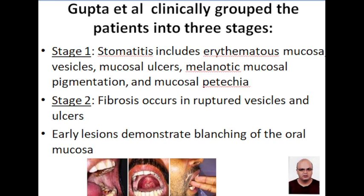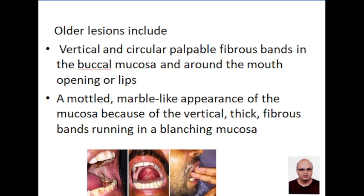Gupta et al. classified OSMF into three stages. In stage one, stomatitis is seen, and the mucosa shows various vesicles, mucosal ulcers, melanotic pigmentation, and petechiae. In stage two, fibrosis occurs in the form of ruptured vesicles and ulcers. Early lesions demonstrate blanching of the oral mucosa; older lesions include vertical and circular palpable fibrous bands in the buccal mucosa and around the mouth opening or lips, with a mottled marble-like appearance due to vertical thick fibrous bands, resulting in blanching of the mucosa.